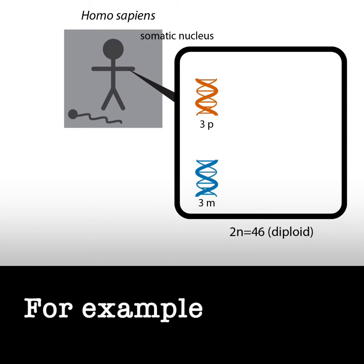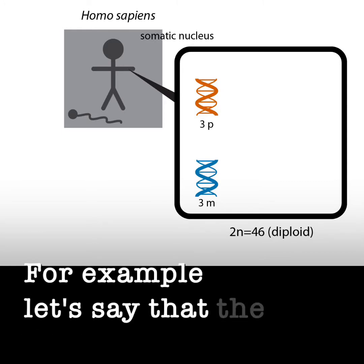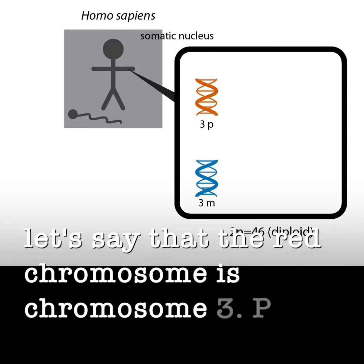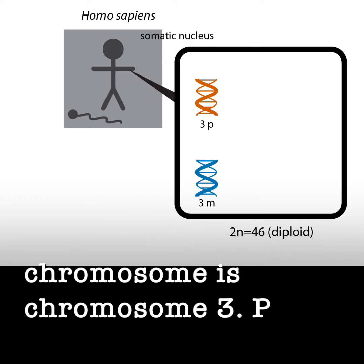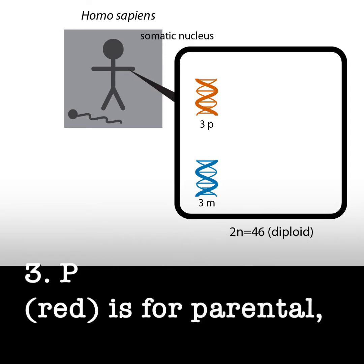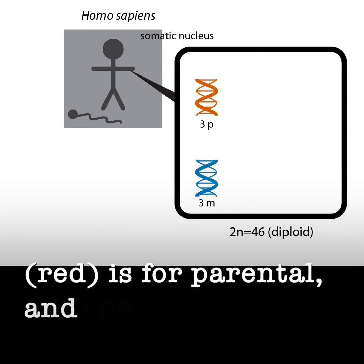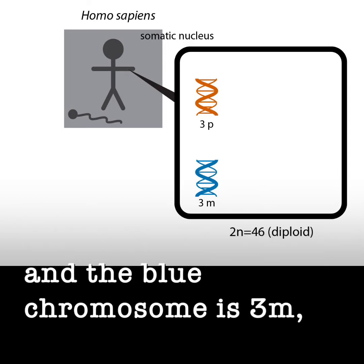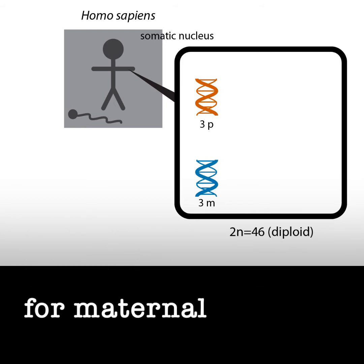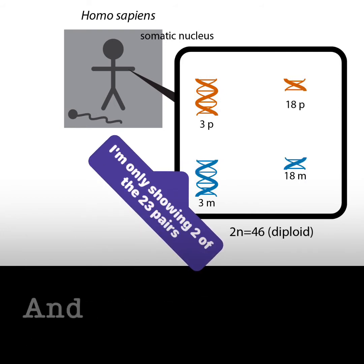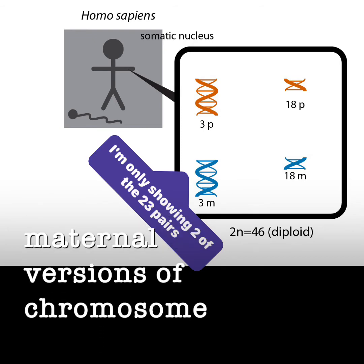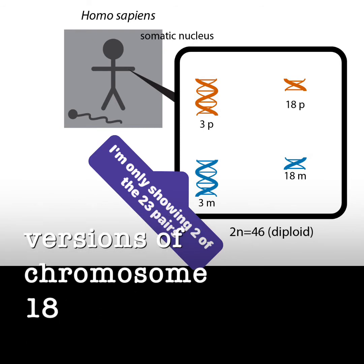For example, let's say that the red chromosome is chromosome 3P — red is for paternal — and the blue chromosome is 3M, for maternal. And here are the paternal and maternal versions of chromosome 18.